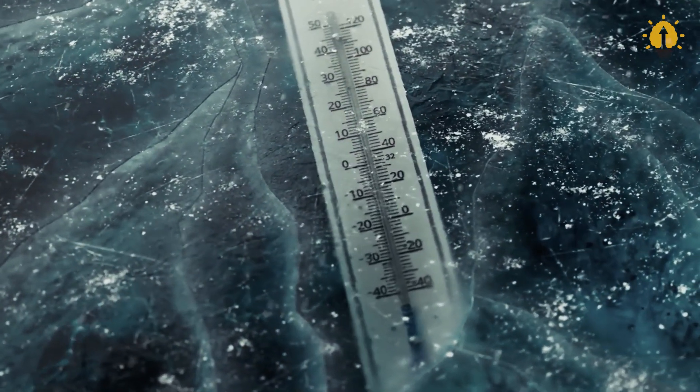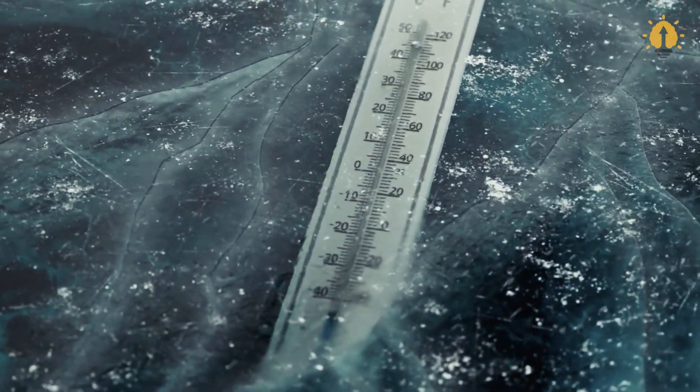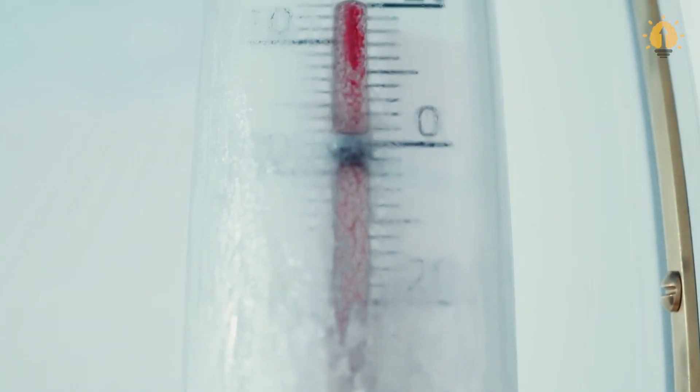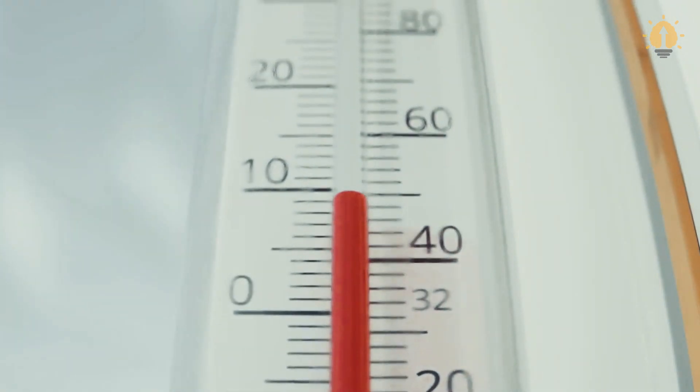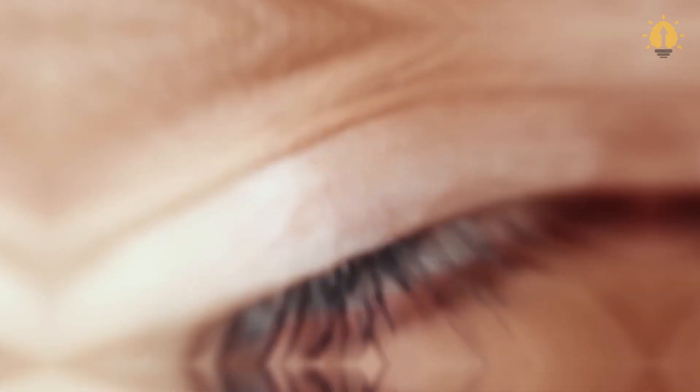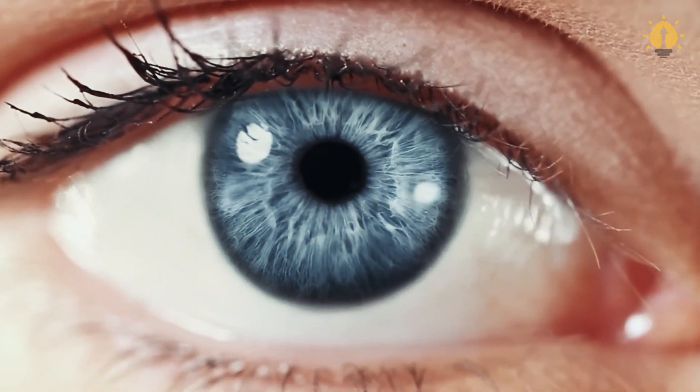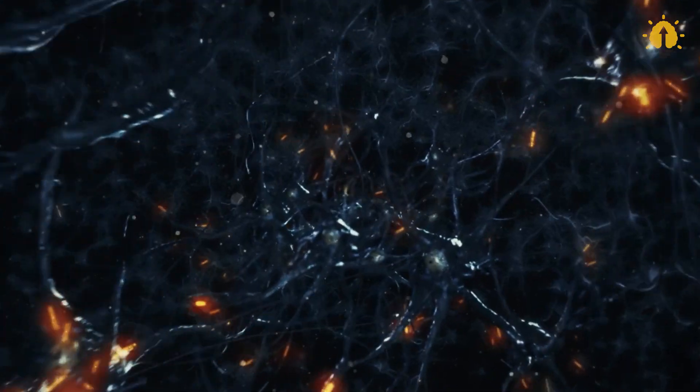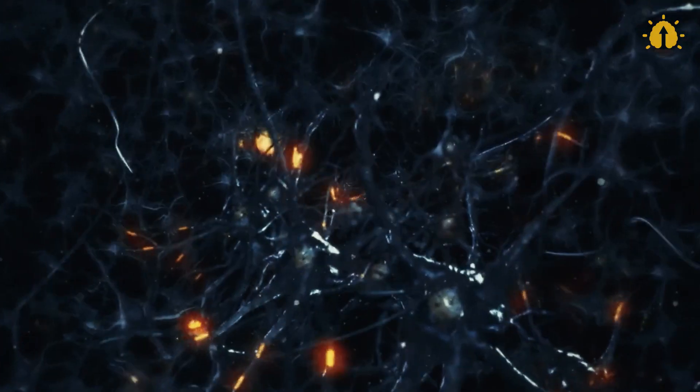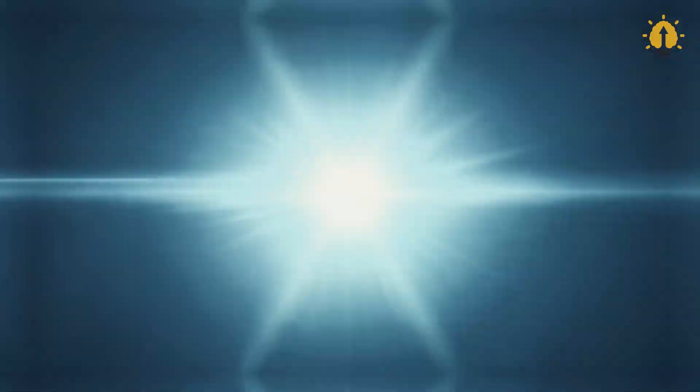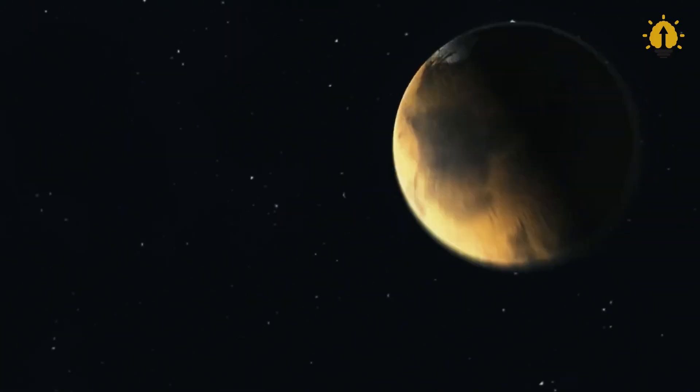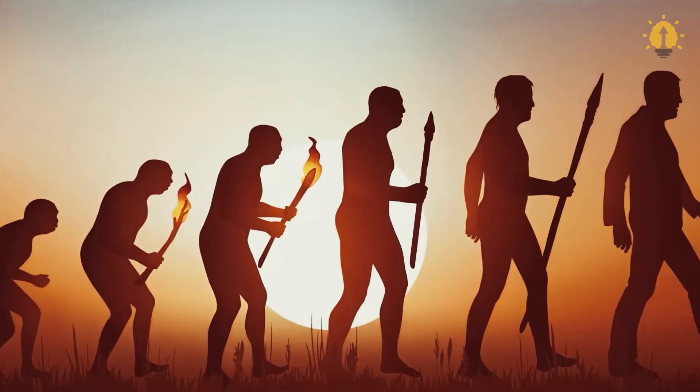This nebula is a celestial cloud composed of dust and ionized gases, showcasing a young planetary nebula with a dying red giant star at its core. Once similar to our own sun, this star has entered its final stages, shedding its outer layers as expected. However, it's doing so at a mind-boggling rate, about 100 times faster than other dying stars.